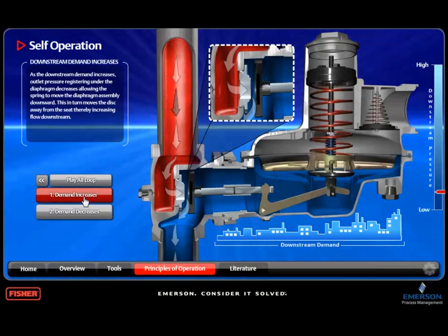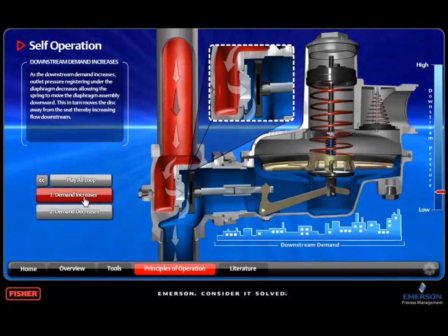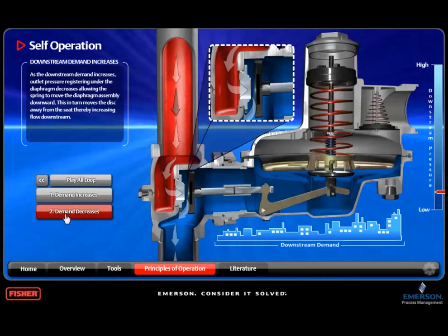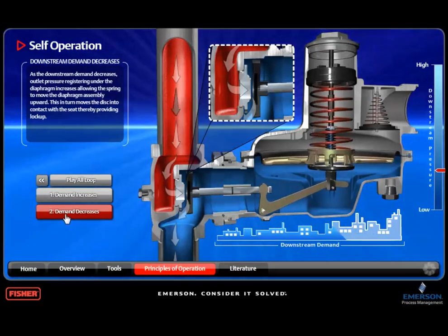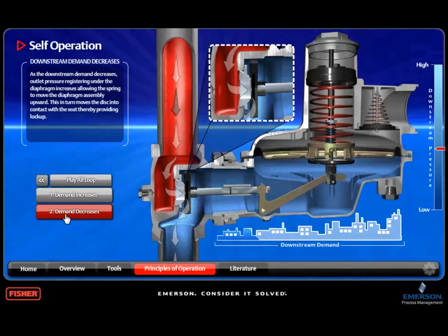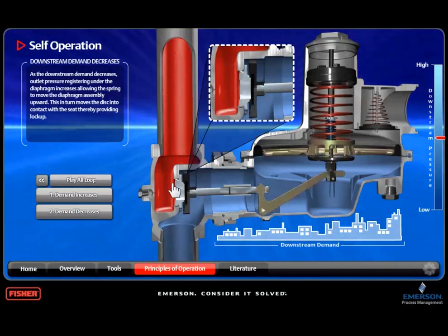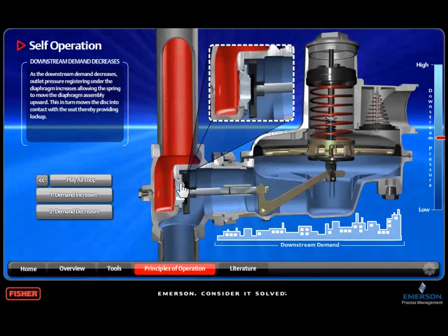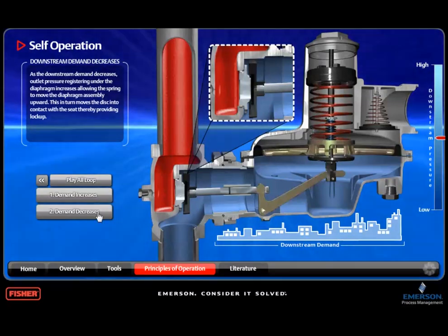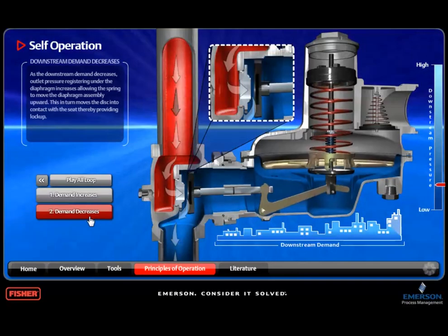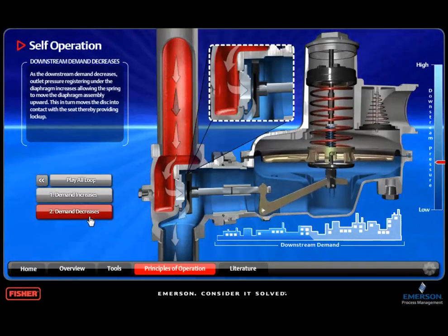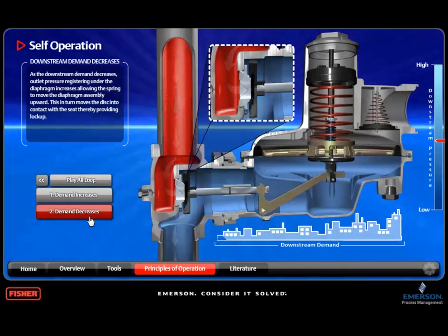Now let's look at what the regulator does when the flow demand from the building's heater decreases. When flow demand decreases, the valve disc needs to move towards the orifice to restrict flow, and the only way that this will happen is for outlet pressure to increase back up to where it was initially. The only reason outlet pressure returned to its initial set point was that the flow demand is again low.